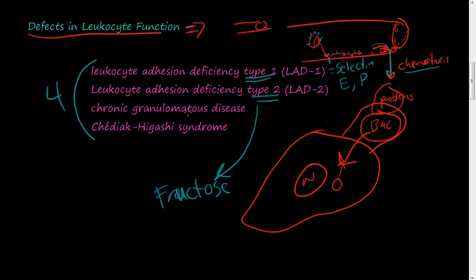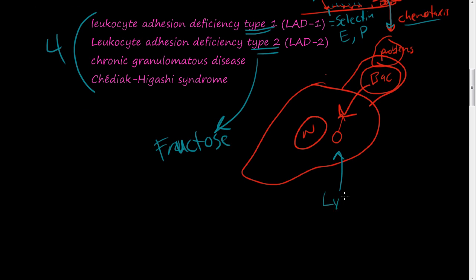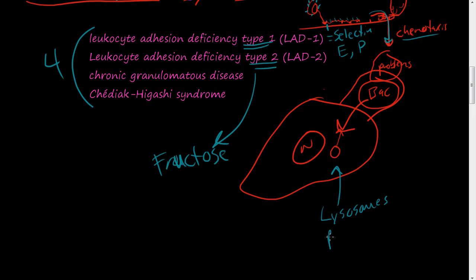With chronic granulomatous disease, the lysosomes normally create reactive oxygen species — free radicals. These free radicals fuse with the bacteria cell and destroy all of its machinery. In chronic granulomatous disease, there is a problem with creating these reactive oxygen species.